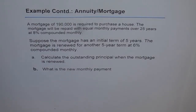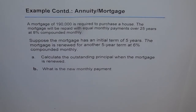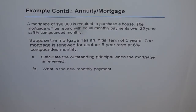This example on mortgage is continued here. A mortgage of $190,000 is required to purchase a house. The mortgage will be repaid with equal monthly payments over 25 years at 8% compounded monthly. This is the example we did in another video. Now here is a variation to the same example. I would like you to go through that video also, though this is fairly independent as I have copied the wordings of the example here.